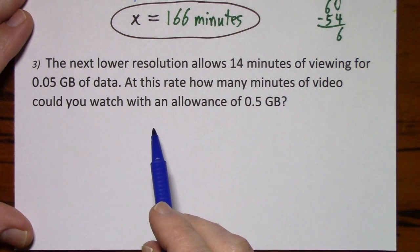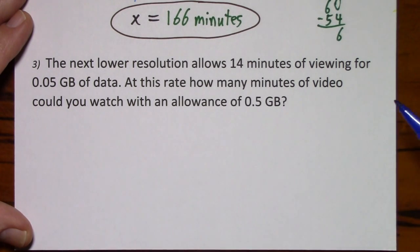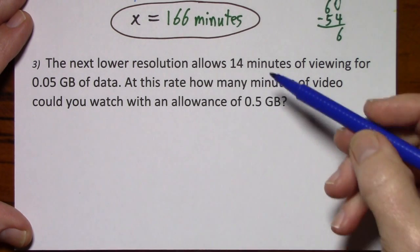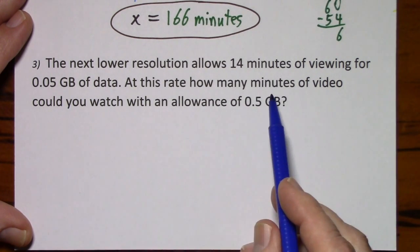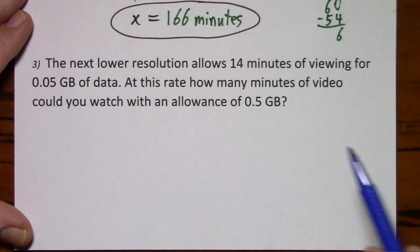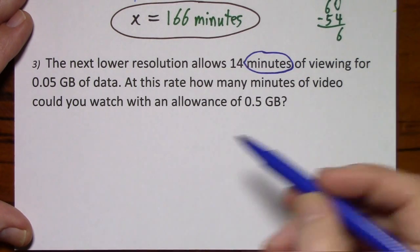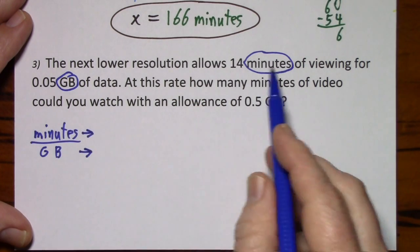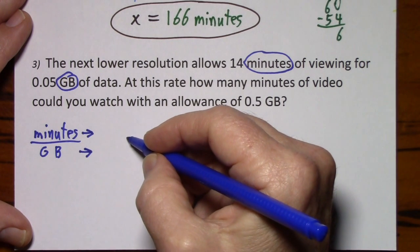I'll give you a minute to read this. So notice we're given three values and asked to find the fourth. We have 14 minutes, 5 hundredths of a gig, how many minutes. That's what we're asked to find, with an allowance of 5 tenths of a gig. So the categories are minutes and gigabytes. I just take them in the order they're given and I stick with it.